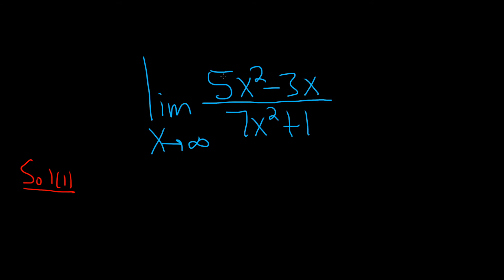So whenever this happens, the answer is always just going to be the ratio of the leading coefficients, so just 5 over 7.